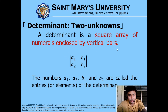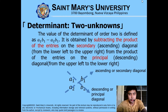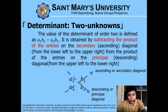If it is enclosed in vertical bars, it is called a determinant. To find the value of the determinant of order 2, it is defined as a sub 1 times b sub 2 minus a sub 2 times b sub 1. This is obtained by subtracting the product of the entries on the secondary diagonal from the product of the entries on the principal diagonal.